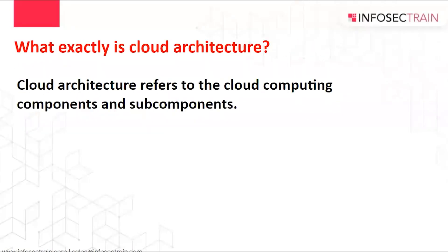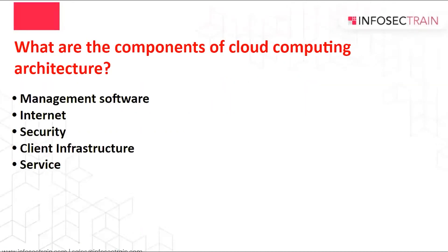What exactly is cloud architecture? Cloud architecture refers to the cloud computing components and sub-components. Front-end platform, back-end platform, cloud-based delivery, and a network are typical components. These elements work together to form cloud computing architecture. The components of cloud computing architecture are management software, internet, security, client infrastructure, and service.